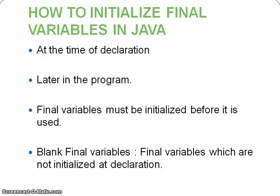How do we initialize final variables in Java? We can initialize final variables in two ways: first, at the time of declaration, and second, later in the program. One important thing to note is that final variables must be initialized before they are used. When we initialize final variables later in the program instead of at the time of declaration, we call them blank final variables.